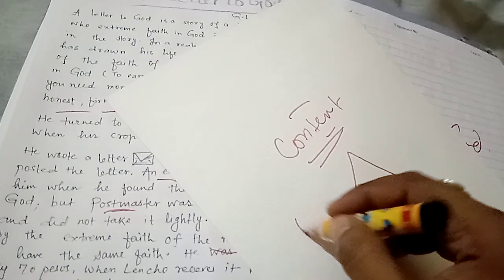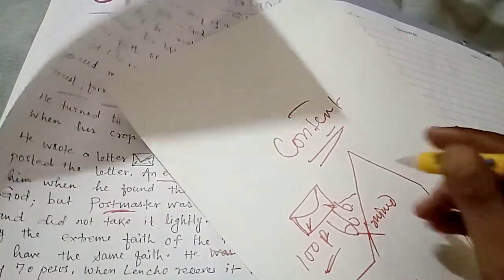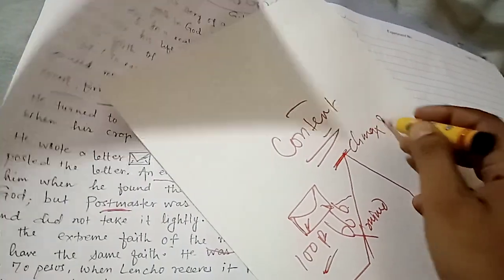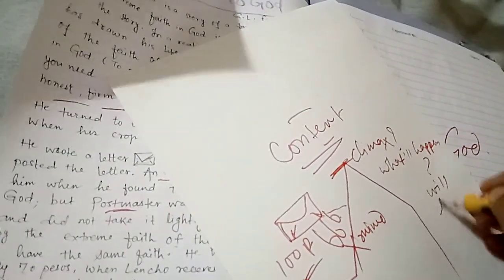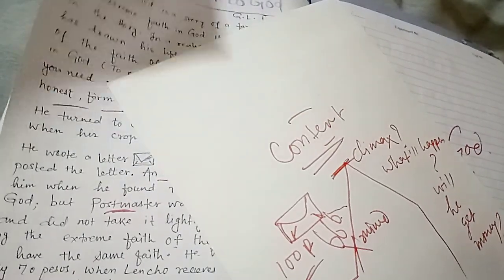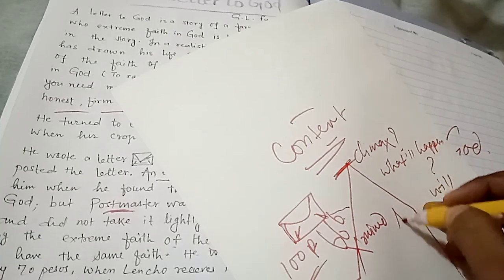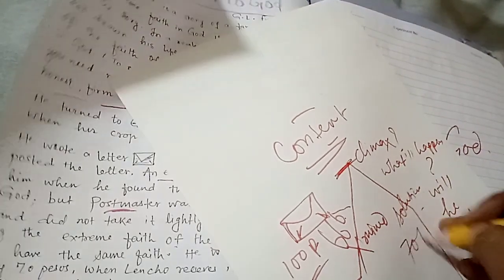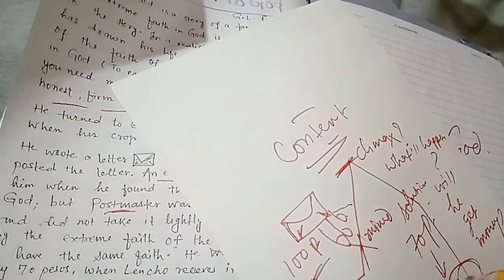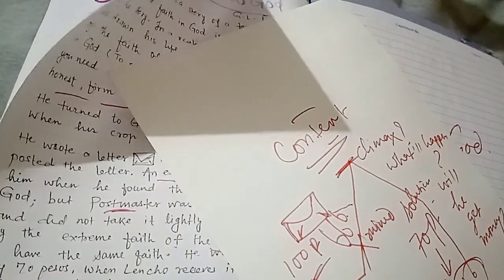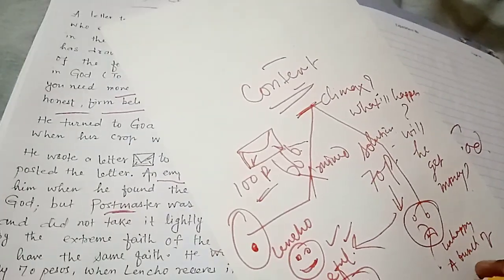Okay, and then he writes the letter, he is writing letter to God for 100 pesos. And then what is the climax in the story, what is the climax, what will happen. Then, means, will he get money, will he be helped by the God and then, you know, what happened, that there is solution. Solution is given that 70 pesos he sent to him, Lencho, but still he is unhappy and he says that, all the employees are a bunch of crooks. So, this is the story after all.